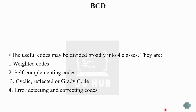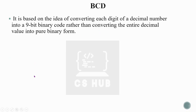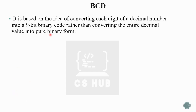BCD is based on the idea of converting each digit of a decimal number into a four-bit binary code, rather than converting the entire decimal value into pure binary. For example, for the number 129, instead of dividing the whole number by two, we convert each digit — 1, 2, and 9 — individually into binary.